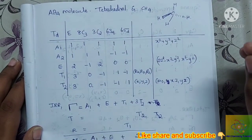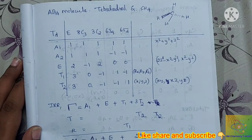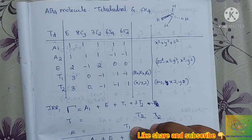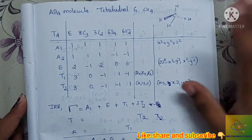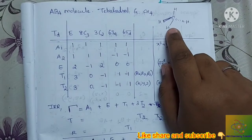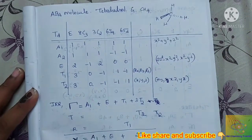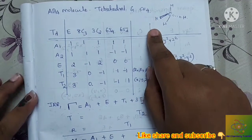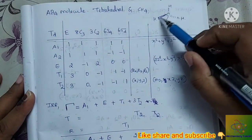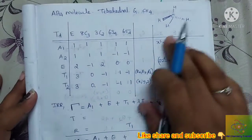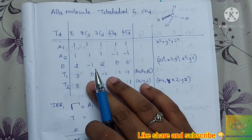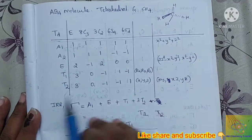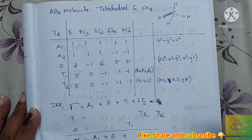Here we are going to talk about the AB4 molecule with tetrahedral geometry. AB4 molecules can have two types of geometry: tetrahedral and square pyramidal. We will cover tetrahedral geometry now, and square pyramidal geometry will be explained in the next video. CH4 is an example of a tetrahedral molecule. The CH4 tetrahedral point group is the Td point group, and we are going to work through the complete character table.